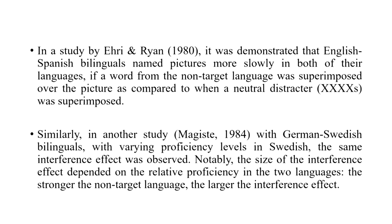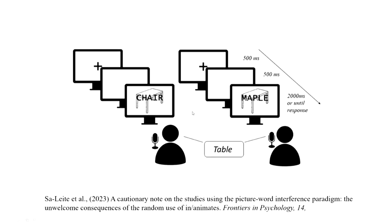Similarly, in another study by Magister and colleagues with German-Swedish bilinguals of various proficiency levels in Swedish, the same interference effect was observed. However, a curious finding was that the size of the interference effect depended upon the participants' relative proficiency in the two languages. The stronger the non-target language, the larger the interference effect — which makes sense. If I am trying to name a picture in English but my stronger and more dominant language is Hindi, you would expect more interference from a non-target language word superimposed on the picture, much like writing 'maze' over the picture of a table would cause more interference in me saying 'table.'